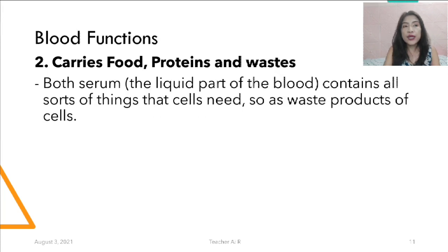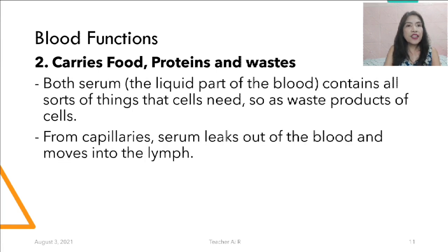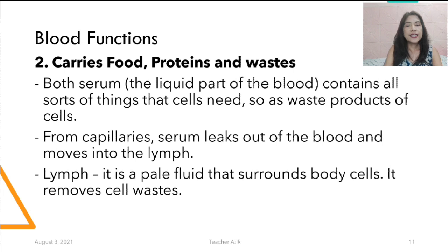This is about food, nutrients, and waste. The serum — the liquid part of the blood — contains all sorts of things that cells need, including waste products of cells. The serum leaks out of the blood and moves into the lymph, carrying proteins and food to different parts of the body. Lymph is a pale fluid that surrounds body cells and removes cell waste.